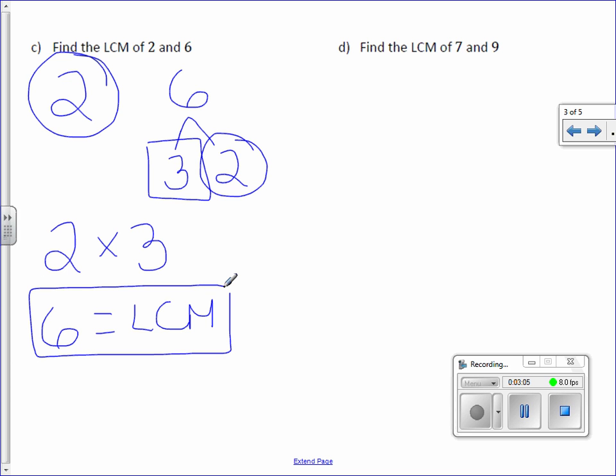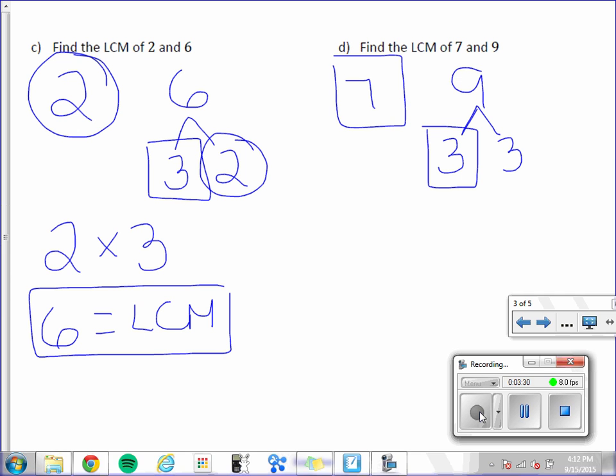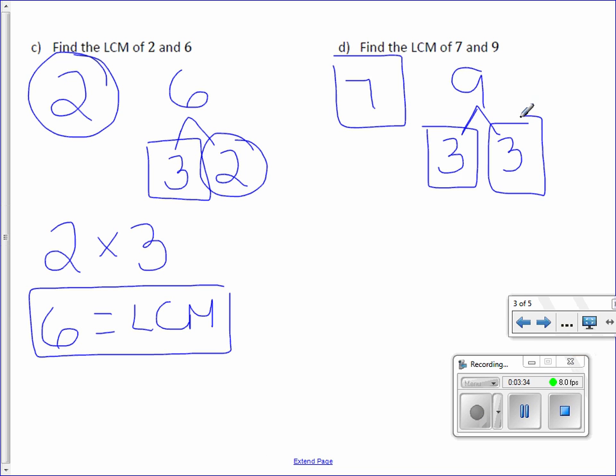Letter D, find the LCM of 7 and 9. 7 is also a prime factor, so we have nothing to do there. 9 we can break down into 3 times 3. Now here, we have nothing in common, which is fine. All of our leftovers will be everything. So we have 7 times 3 times 3. 7 times 3 is 21, and 21 times 3 is 63. So the LCM is 63.